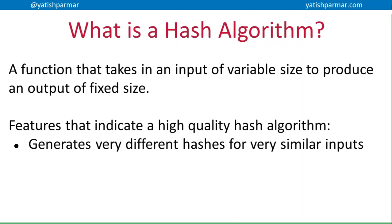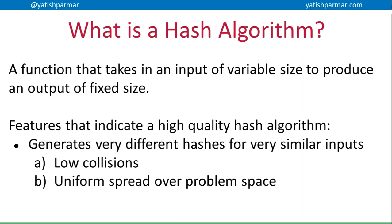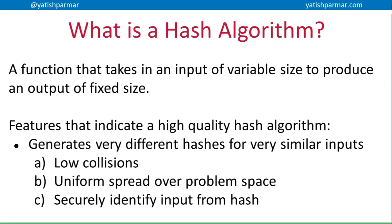Even if we feed in two bits of data that are quite similar in nature, we're going to get an output that's vastly different. That means we're going to reduce the amount of collisions — two input streams generating the same output hash, causing confusion. There is also a uniform spread over the problem space, so we're not generating a bunch of hashes within the same range. Every time we generate a hash it's going to be quite wildly different, which makes it easy to identify the input based on the hash without needing to resolve a collision.